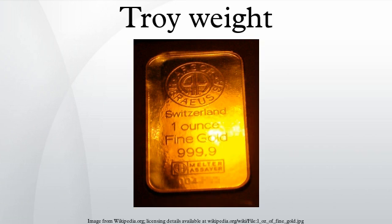Sterling originally referred to the Norman silver penny of the late eleventh century. The coin was minted to a fineness of eleven ounces two dwt, or 0.925 millesimal fineness. See also: carat, conversion of units, mark, troy ounce, grain.